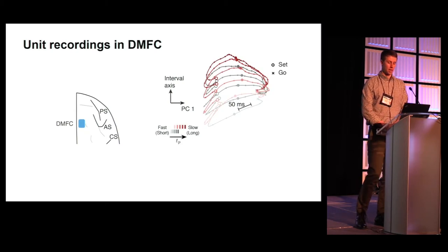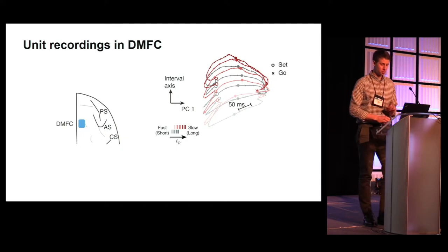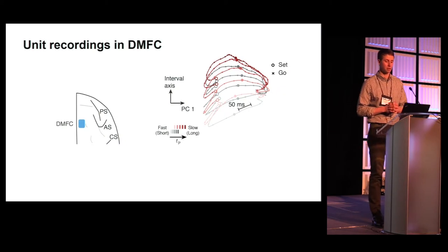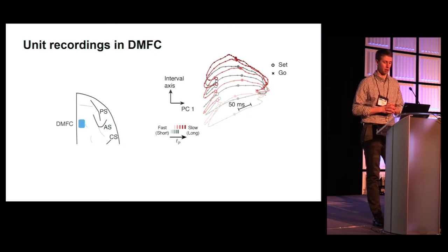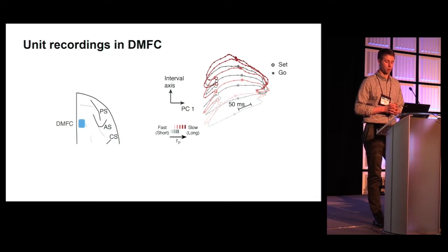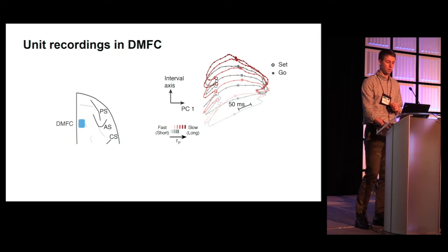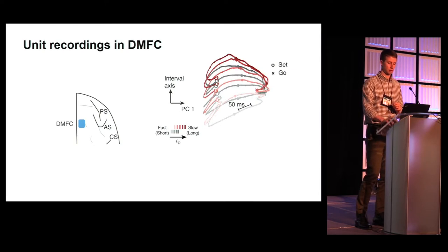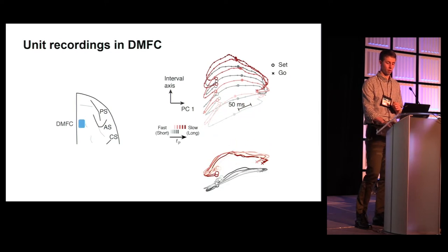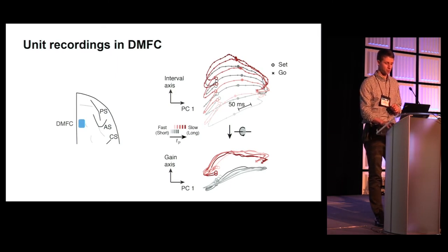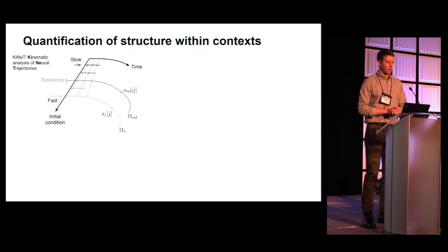Now I've added the neural responses to the gain of 1.5 condition. I'll draw your attention to two features. First, the speed of the trajectories for the gain of 1.5 are slower than those for the gain of 1. Second, activity is not well organized along the interval axis across both contexts. In particular, responses from both gains at the time of set, that is the initial conditions illustrated by circles on the left, are highly similar across contexts in this projection. Now I'll rotate the trajectories to illustrate the axis along which trajectories were maximally separated across contexts. Here we see that the data follows the prediction of the geometry under a gain-dependent input.